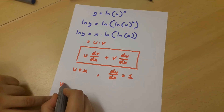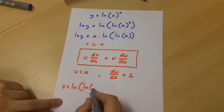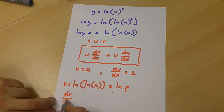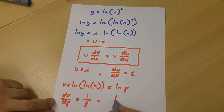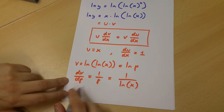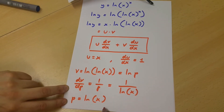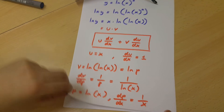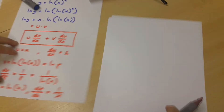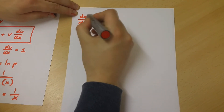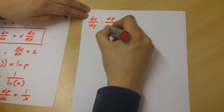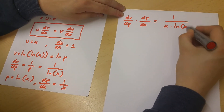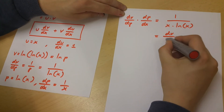We are also going to say that v is equal to ln ln x, which is equal to ln p. Now dv over dp is going to be 1 over p, which is 1 over ln x. p itself is equal to ln x, therefore dp over dx is equal to 1 over x. Now using the chain rule, we get dv over dx by multiplying dv over dp by dp over dx, and that is equal to 1 over x times ln x.